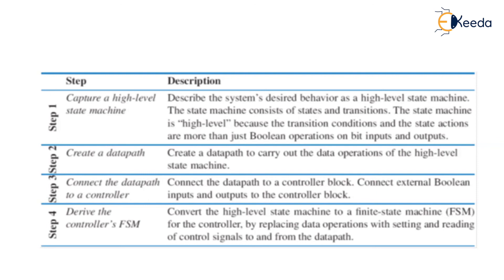The fourth step is to convert the high level state machine into a finite state machine for the controller, by replacing the data operations with setting and reading of control signals to and from the data path. In summary, the RTL design process has four steps: first, draw the high level state machine; second, create a data path; third, connect the data path to a controller; and fourth, convert the high level state machine into a finite state machine. When you connect both, you end up with a processor — completing your custom processor design. In our next video we shall see an example of a custom processor.